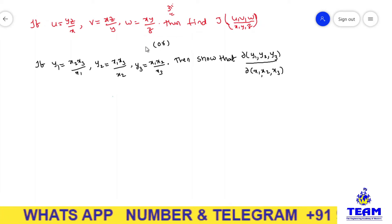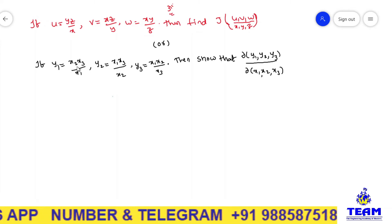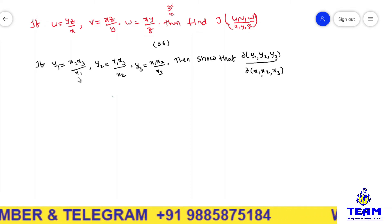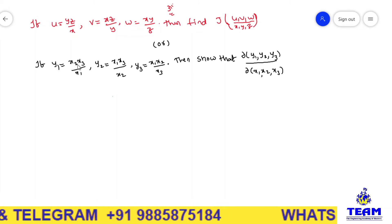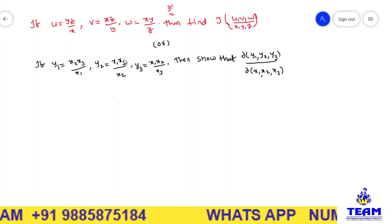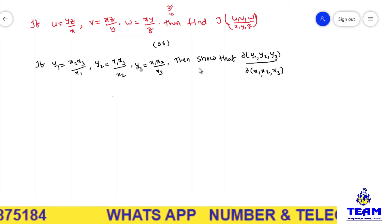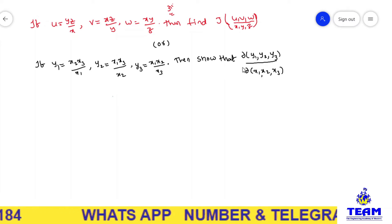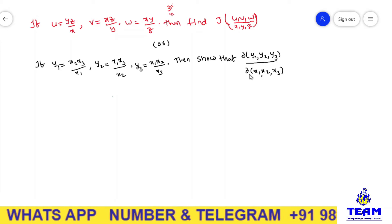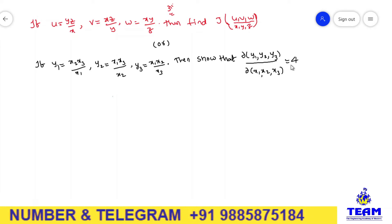The same problem is also asked another way: y1 is equal to x2·x3 by x1, y2 is equal to x1·x3 by x2, y3 is equal to x1·x2 by x3. Then show that the Jacobian of y1, y2, y3 with respect to x1, x2, x3 is equal to 4.